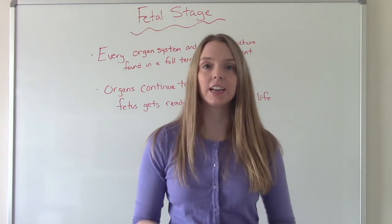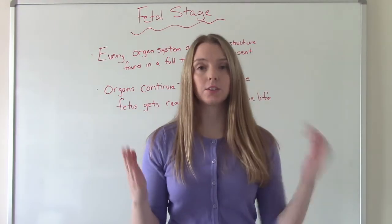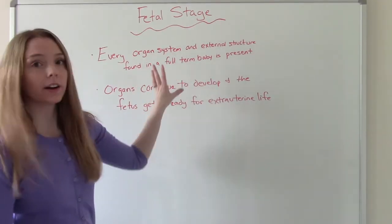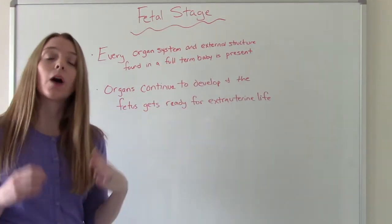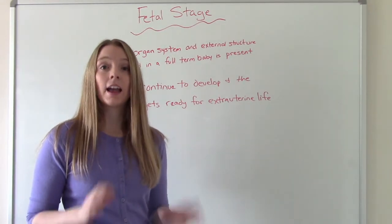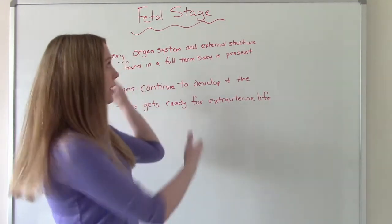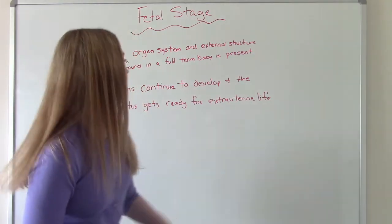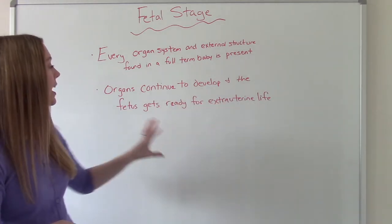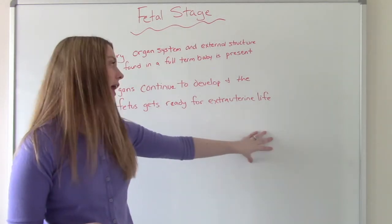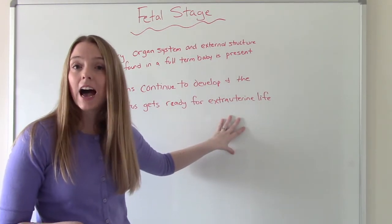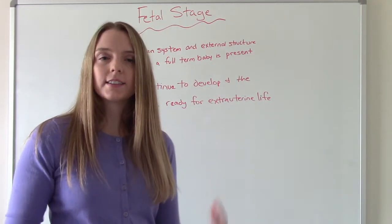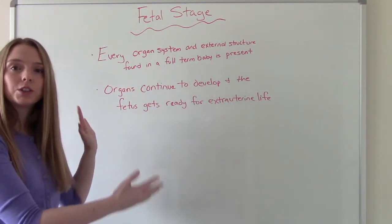Now we're on to the final stage: the fetal stage. This is also the longest stage — weeks nine to birth. During this stage, the baby already has every organ system and every external structure that will be found on a full-term baby. They are still a bit primitive and not ready to be born at nine weeks, but they have the start of everything. Organs continue to develop and the fetus gets ready for extra-uterine life, developing its reflexes and getting bigger and stronger.